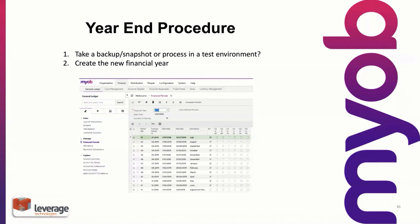The first step is to create the new financial year, if you haven't already done so. This screen shows it's simply a matter of entering the new financial year, adding the new record, then generating the periods and saving. This is within the general ledger, financial periods.